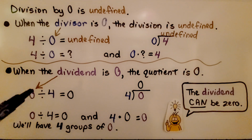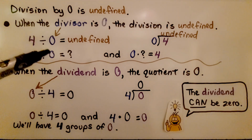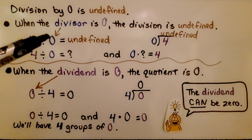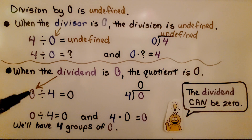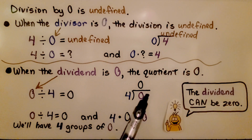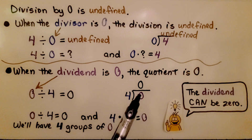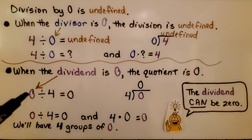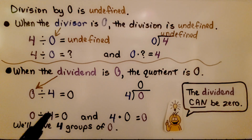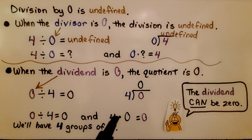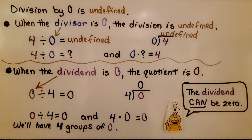But the dividend can be zero. When the dividend is zero — the first number, or the number on the inside of a division bracket — the quotient is zero. We have zero divided by four equals zero, and the related multiplication would be zero times four, or four times zero, equals zero. We have four groups of zero.